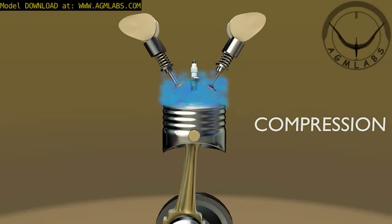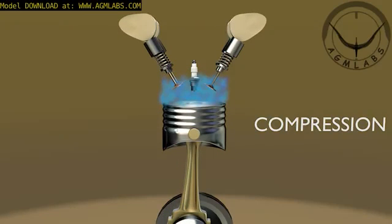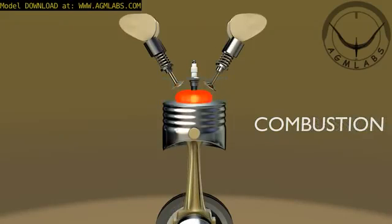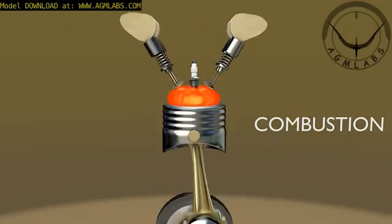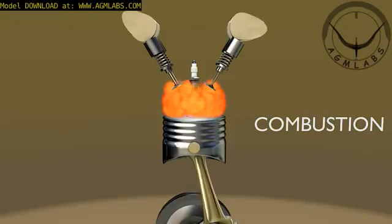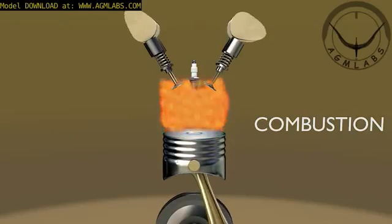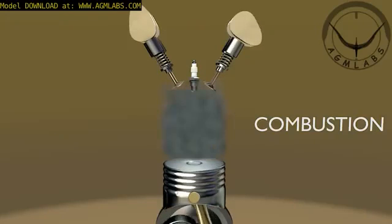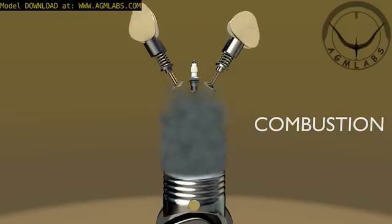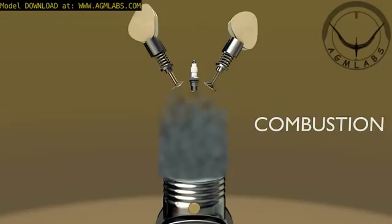Just before the piston reaches the top of its compression stroke, a spark plug emits a spark to combust the fuel-air mixture. Third, combustion stroke: the piston is now forced down by the pressure wave of the combustion of the fuel-air mixture. The engine's power is derived from this cycle.